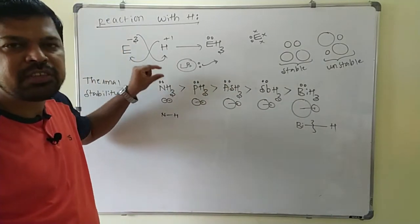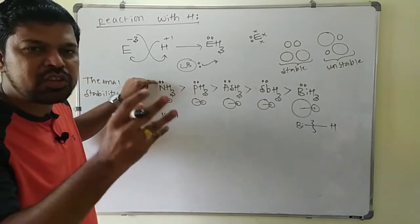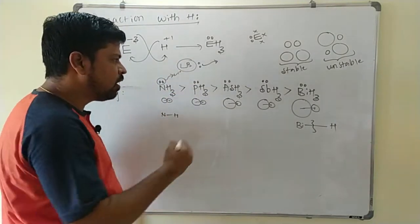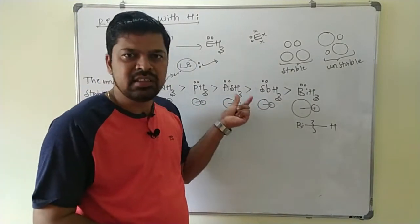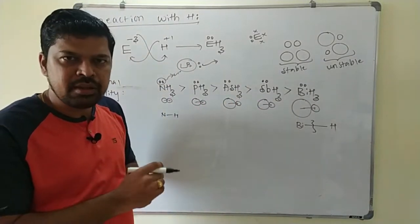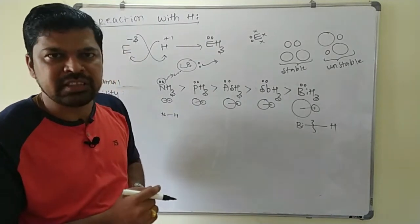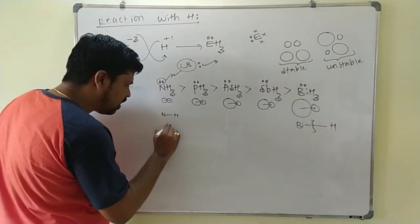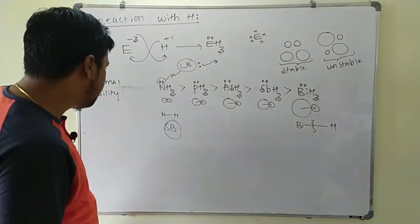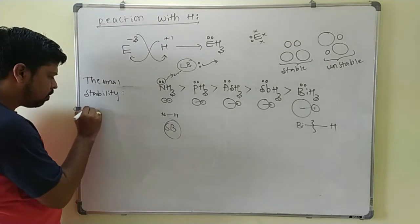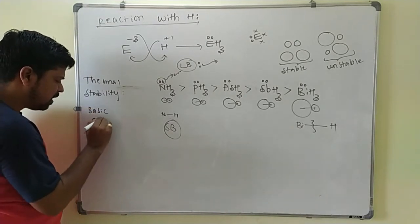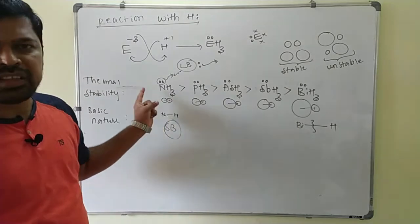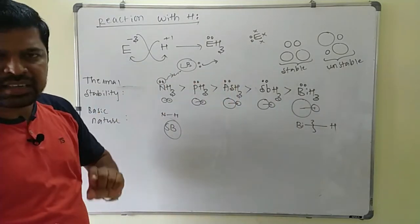In the case of nitrogen, because of its small size, the lone pair of electrons is concentrated in a small region and is easily available for donation to other species. But as atomic size increases down the group, the lone pair is scattered over a large region and is not easily available for donation. Hence, with increasing atomic size down the group, their basic nature decreases. Ammonia is the strongest base; for thermal stability and basic nature, the same order applies.